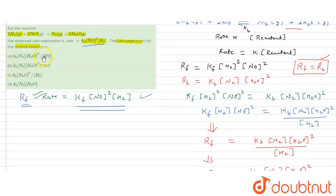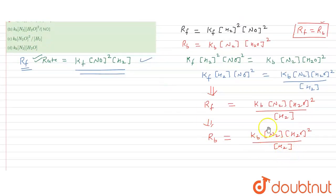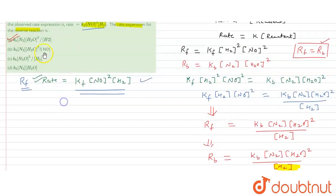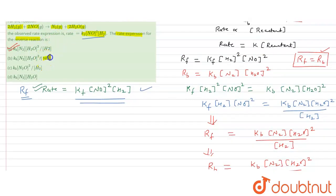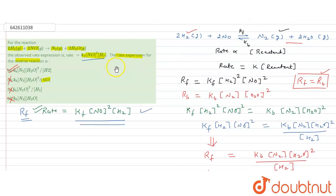Checking the options: Option A gives kb[H2O]²[N2] divided by [H2], which matches our derived expression, so Option A is correct. Option B has division by NO instead of H2, which is wrong. Option C also has the wrong numerator with N2 missing correctly. Therefore, Option A is the correct answer for the rate of the reverse reaction.